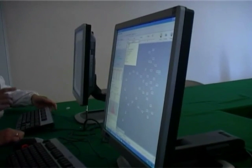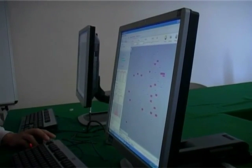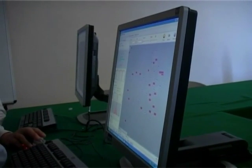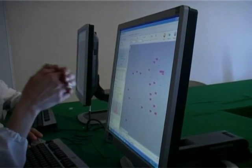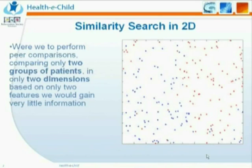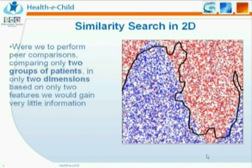Thus, similarity searching could become the backbone of clinical decision support. Were we to perform peer comparisons — comparing only two groups of patients in only two dimensions, based on only two features — we would gain very little information.